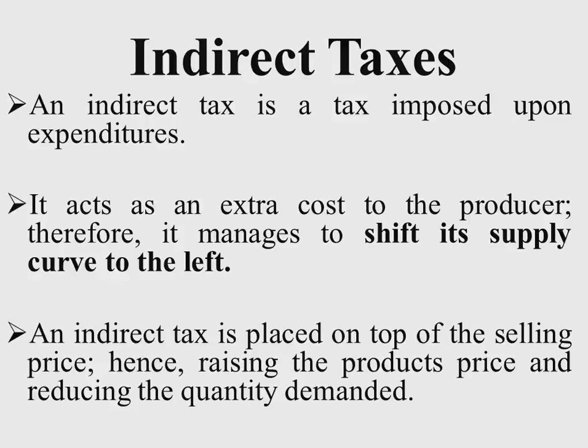An indirect tax is placed on top of the selling price, hence raising the product's price and reducing the quantity demanded. The reason quantity demanded reduces is because of the law of demand: ceteris paribus, if there is an increase in the price of a given commodity, its quantity demanded reduces.